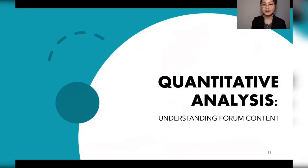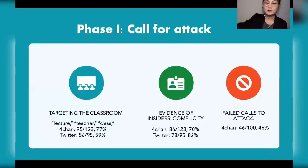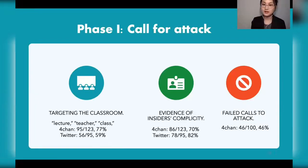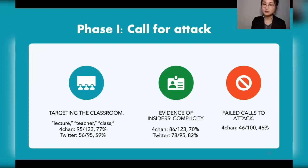Based on the threat model, we analyzed attacks across four phases. In the call-for-attack phase, attackers post calls on online platforms. Many bombing posts include text indicating online classes as the target — words like lecturer, teacher, and classes appear regularly. We found that 77% of Zoom Bombing threads on 4chan target online classes. On Twitter, 59% of bombing calls target schools.